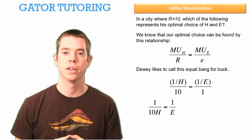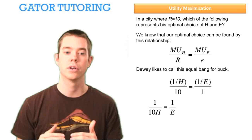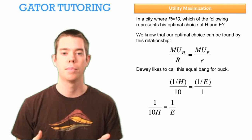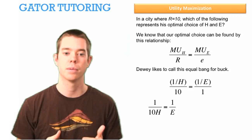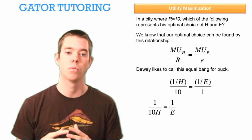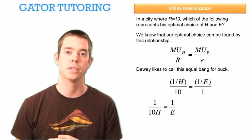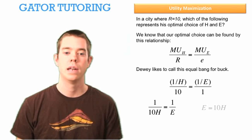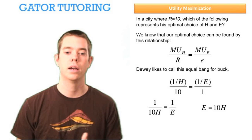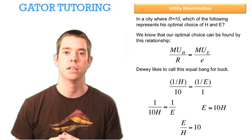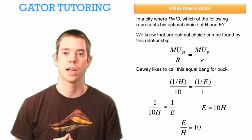We can simplify this. H gets moved to the denominator giving us 1 divided by 10H, and E gets moved to the bottom giving us 1 divided by E. Cross multiplying, we get E is equal to 10H. We can divide through by H to see that 10 equals E divided by H, and that matches one of the answer choices given.